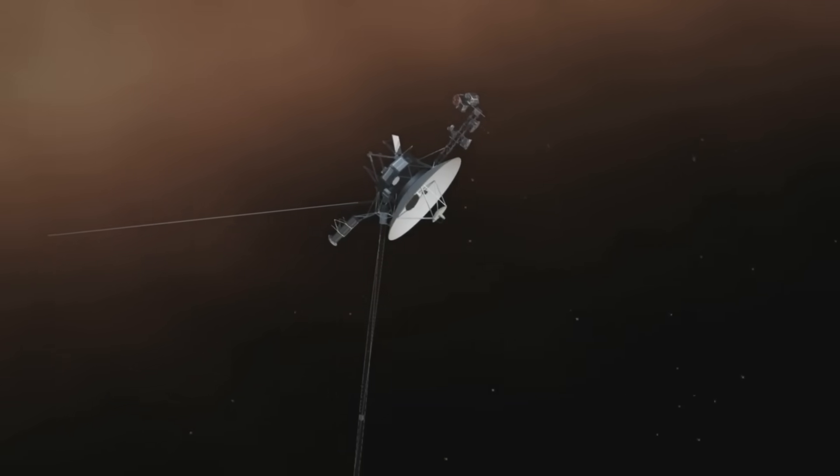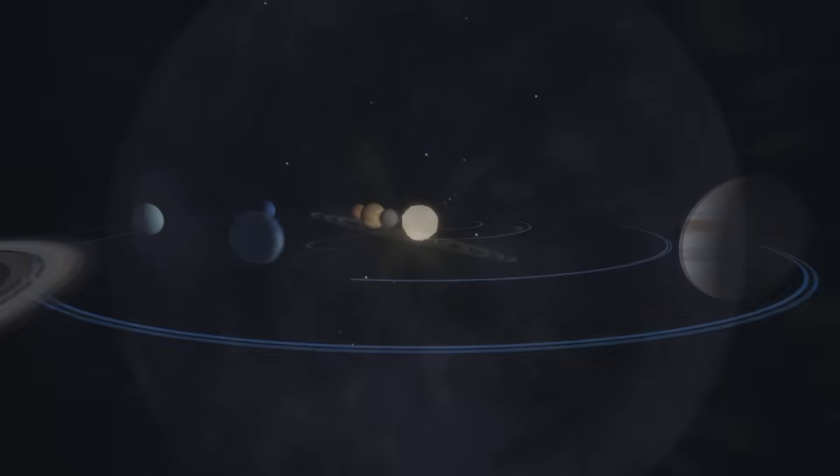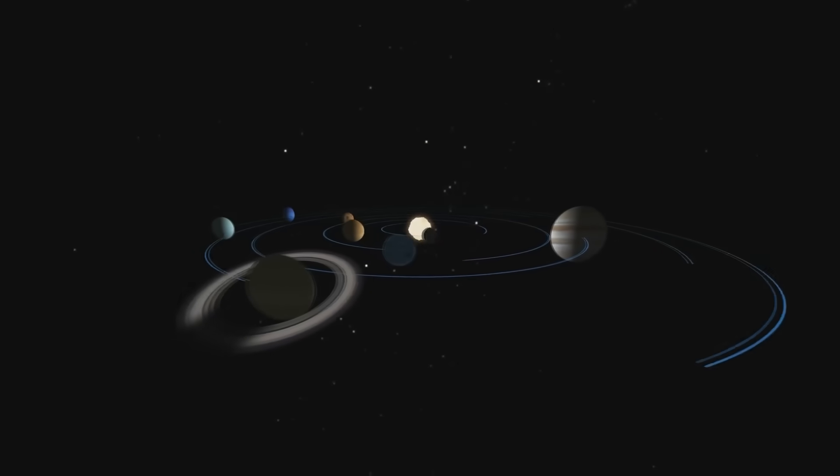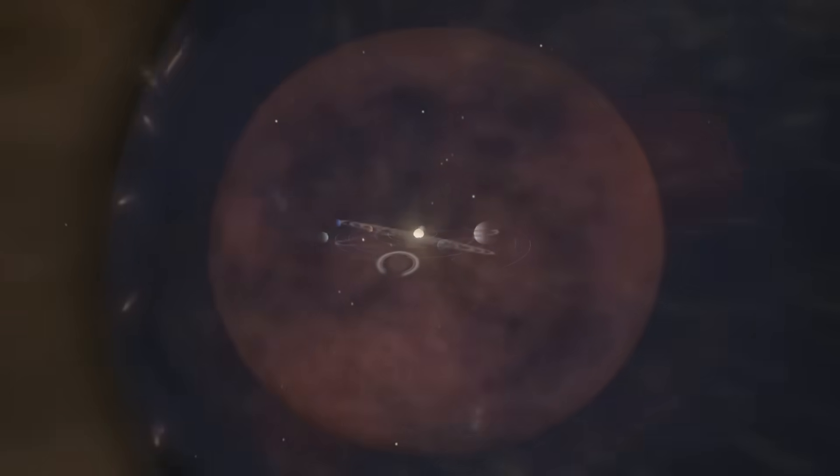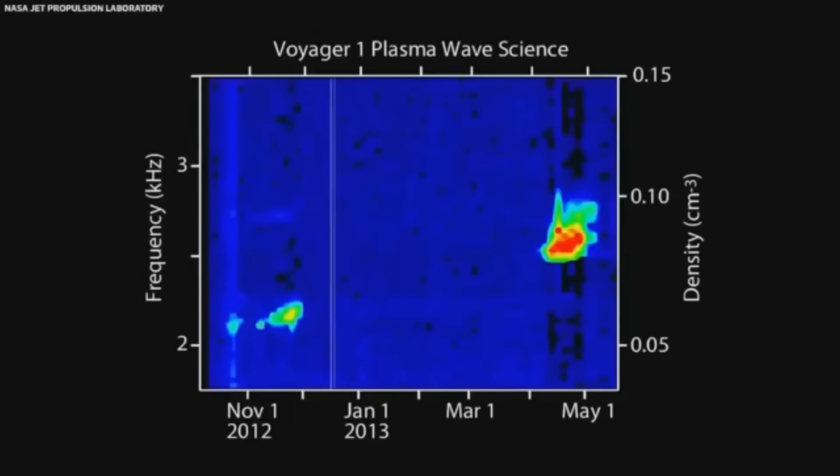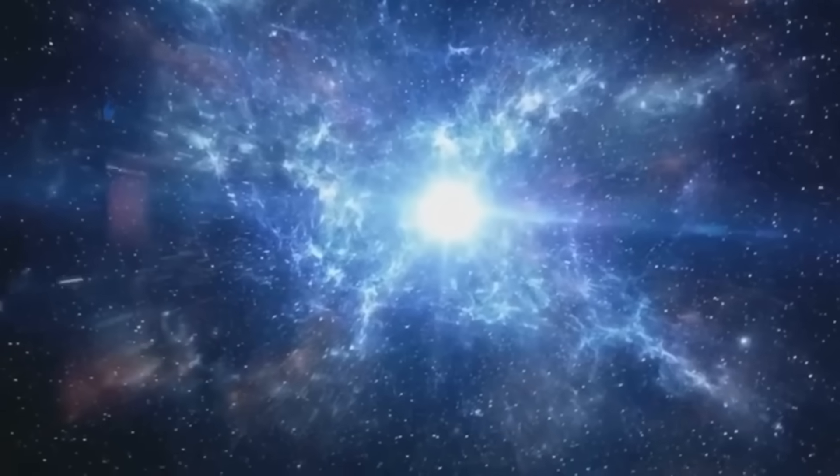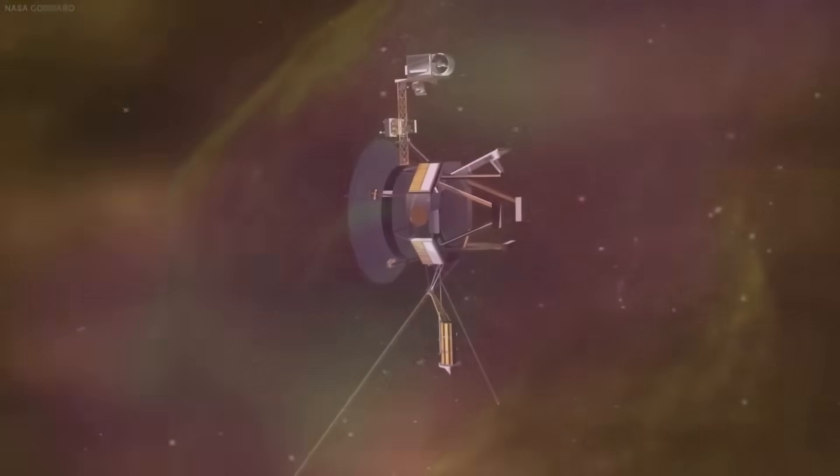Just after crossing the heliopause, the supposed end of the sun's domain, Voyager 2 registered a sudden and massive shift in plasma density and radiation. But this wasn't a gradual fade-out. The data changed almost instantly, as if Voyager had crossed from one room into another.